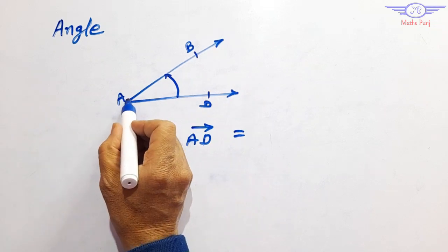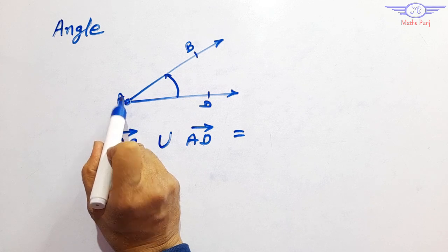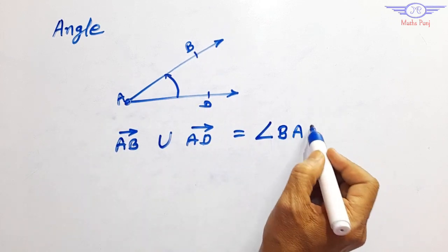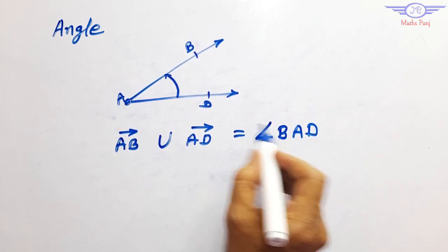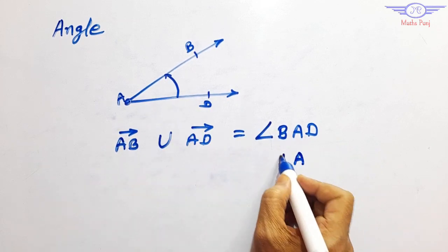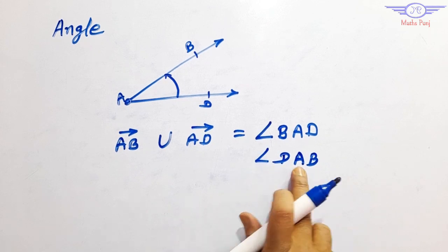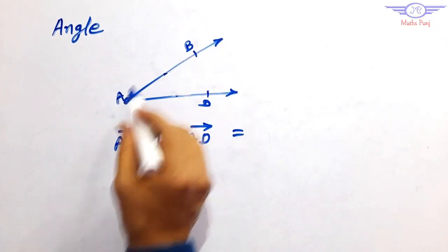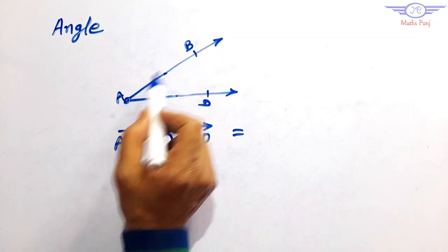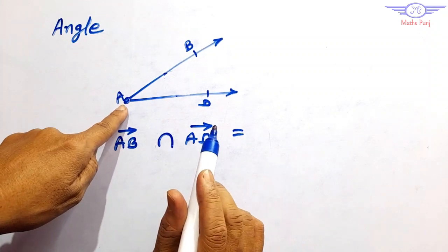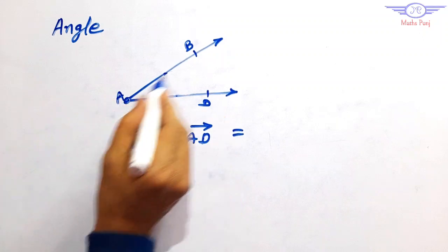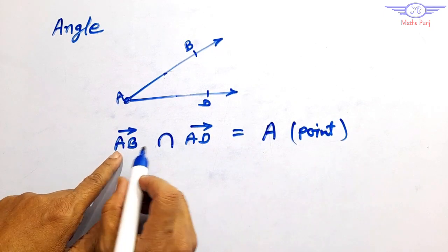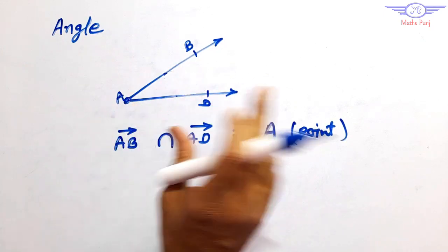When two rays intersect each other — ray AB and ray AD — the intersection point is point A only. So the intersection of the two rays is a point, and the union of the two rays forms an angle.